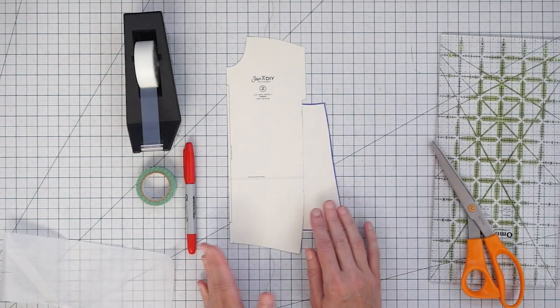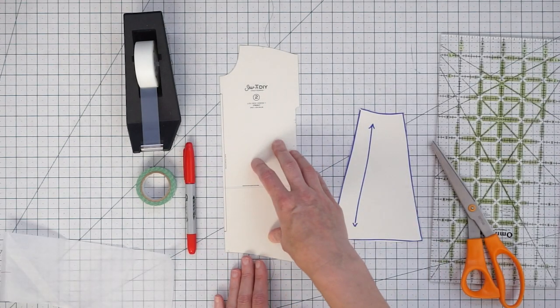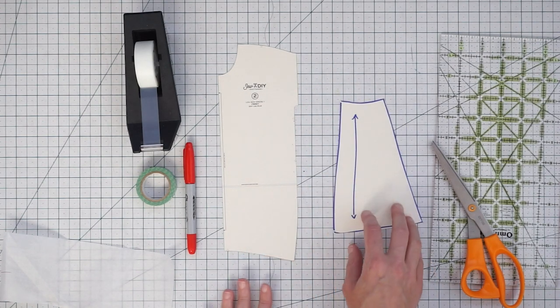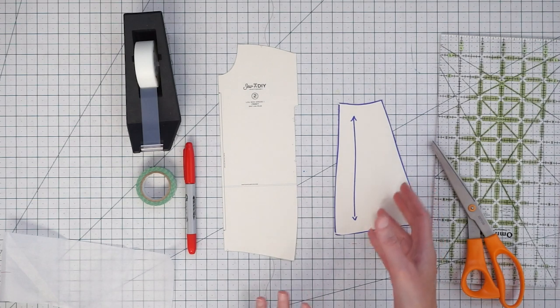For this example, I'm using my Lou Box Dress 1, which is a cocoon-shaped dress, and then I've just made up a skirt pattern as another example.